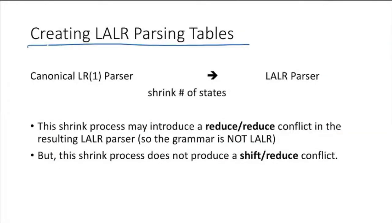Creating LALR parsing table—how we do it? We have, say, canonical LR(1) parser. We can convert it to LALR parser by shrinking the number of states, shrink the number of states means merging them. So this shrink process may introduce a reduce-reduce conflict in the resulting LALR parser, so the grammar is not LALR.